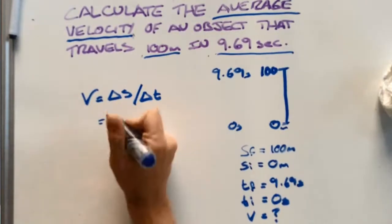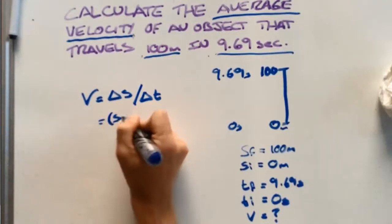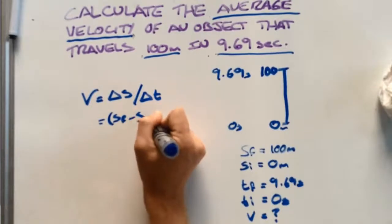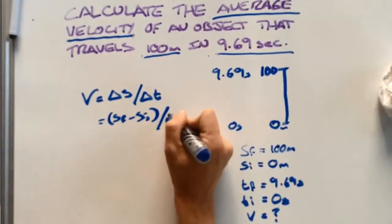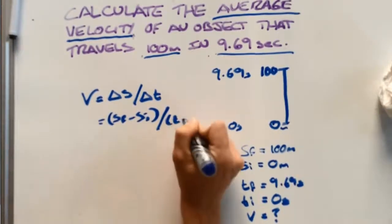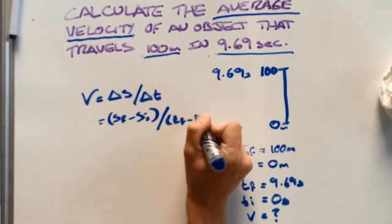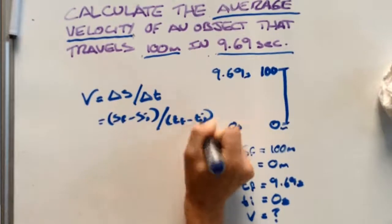So we can write this out further as our final displacement minus our initial, divided by our final time minus our initial time.